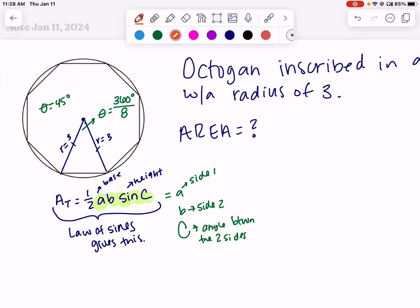Now we're ready to find the area of this triangle. The area equals one-half, this side which is 3, the other side which is 3, sine of that angle between them, which is 45. I put this into my calculator and get approximately 3.18 units squared.